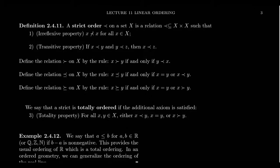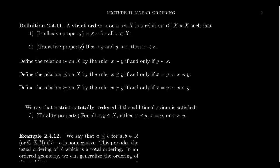I promised earlier that in Lecture 11 we would explain why an order geometry is called ordered — what order are we referring to? First of all, we have to make sure we understand what an order is in the first place. It's more specifically a strict order, not to be confused with a partial order, although the two notions are related. I'll explain the relation in just a second.